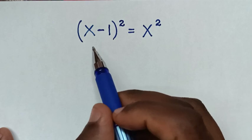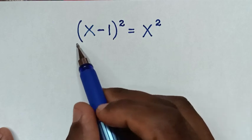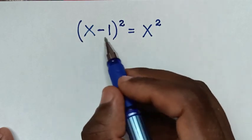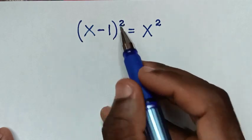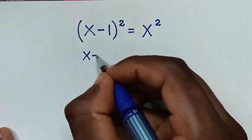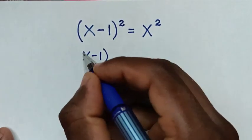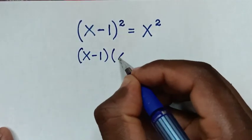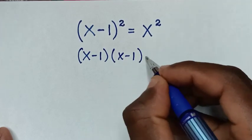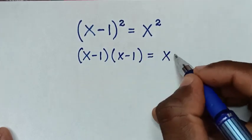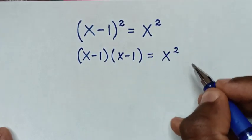Let's start with the first method. x minus 1 bracket squared is the same as x minus 1 bracket times x minus 1 bracket, and this is equal to x squared.